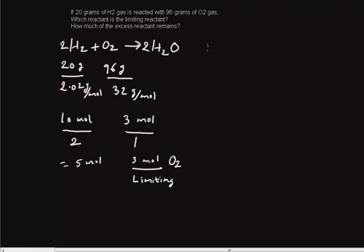We always calculate the amount of excess with regards to the limiting reactant. So our limiting reactant is O2 and our excess reactant is H2. So that's limiting. This is excess.